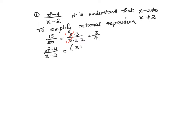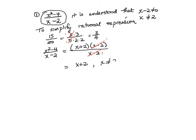x squared minus four is the difference of two squares, which factors into x plus two times x minus two, all divided by x minus two. When we divide through the common factor of x minus two, our answer is x plus two. But when we write it this way, it appears to be just the equation of a line, so we must write down that x does not equal two.